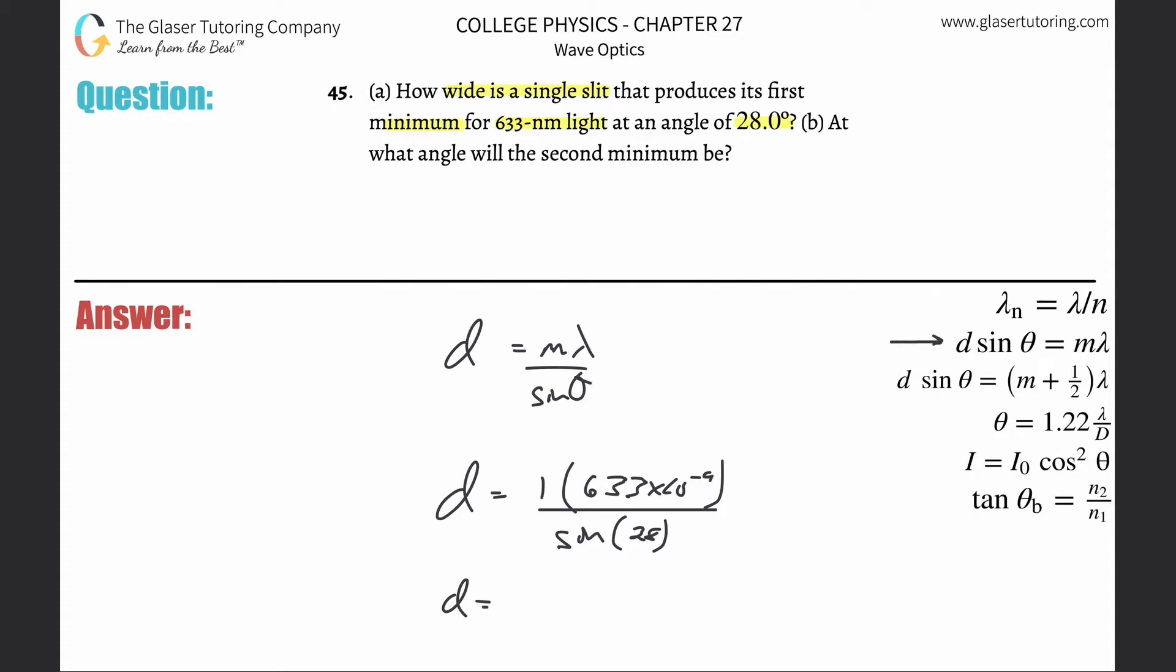Make sure your calculator is in degree mode, and let's do it. So 633 times 10 to the minus 9th, divided then by sine of 28. What do we get? 1.35 times 10 to the minus 6, and that's going to be in terms of meters. So that's how wide the slit is.